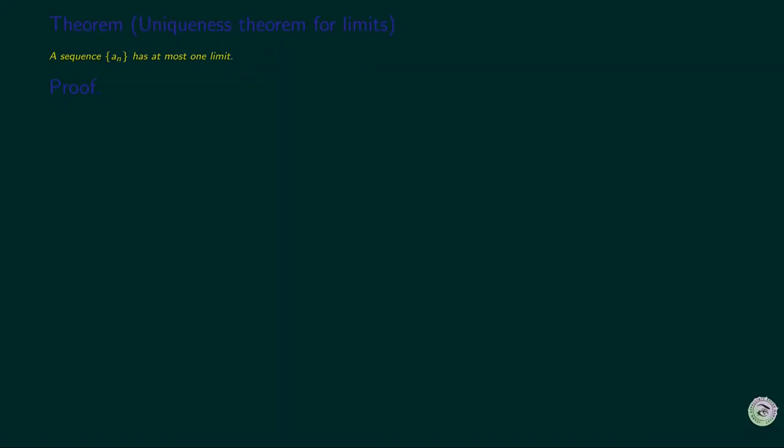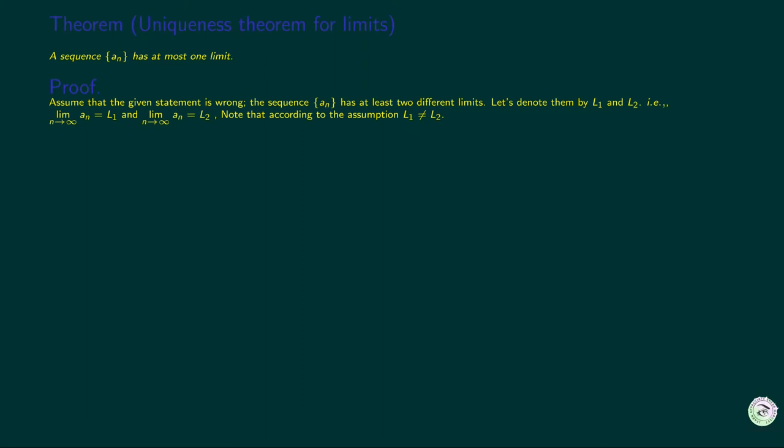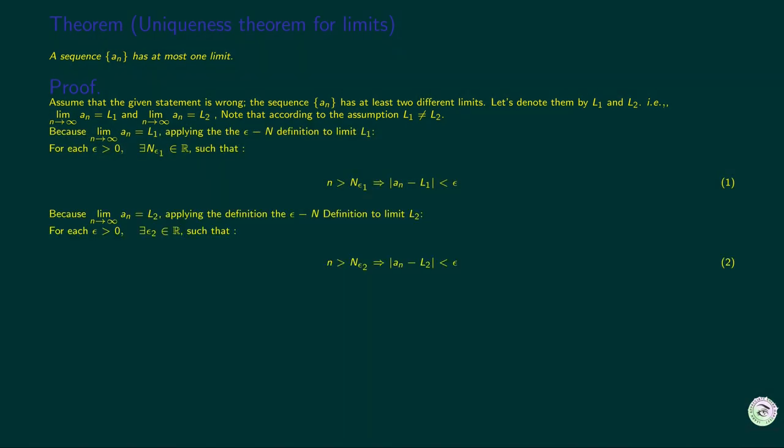The theorem states that a sequence has at most one limit. Let's assume that the given statement is wrong. Then the sequence will have more than one limit. So it should have at least two different limits. Let's label them by l1 and l2. Now note that according to the assumption, l1 is not equal to l2. Now since l1 and l2 are limits, they should satisfy the epsilon definition. We don't have to prove that they are limits. We can take them to be limits.